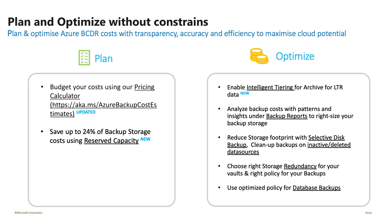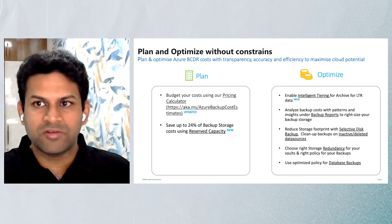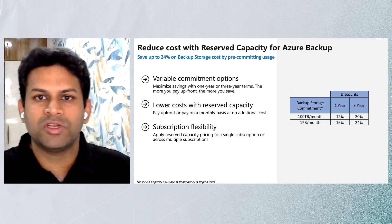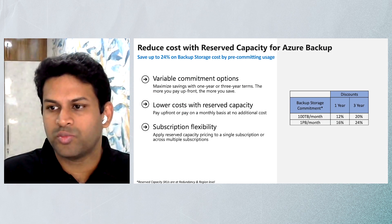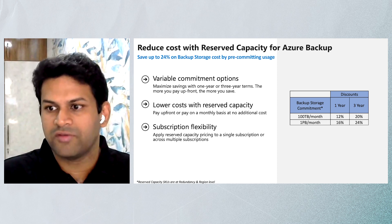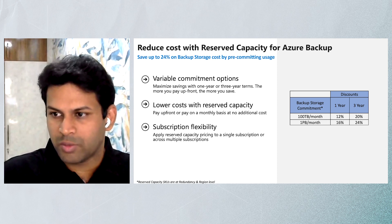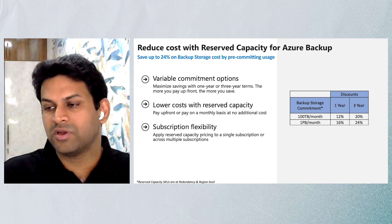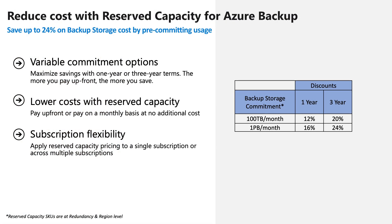You can also clean up backups to remove inactive or deleted data sources. On reserved capacity: pre-committing 100 TB per month for one year gives you a 12% discount, and for three years a 20% discount. Pre-committing one petabyte per month gives you 16% and 24% respectively. For Azure Backup reserved capacity, you can pay upfront or on a monthly basis at no additional cost, and you can use it for a single subscription or across multiple subscriptions.